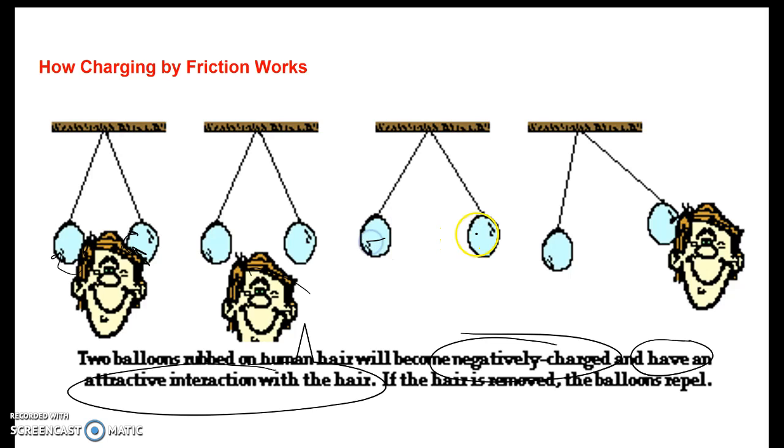When you pull your head away, these negatively charged balloons will repel each other. But if you put a positively charged object, in this case your head, you will attract one of the balloons to you. Rubbing them makes them negative, so that's what charging by friction is.